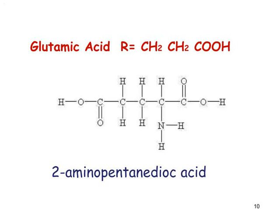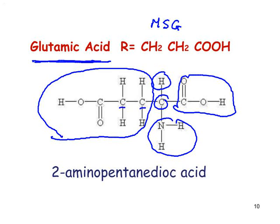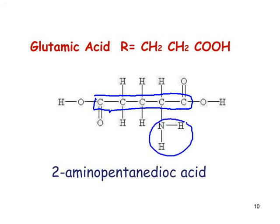Another amino acid worth knowing is glutamic acid, which appears in exam papers occasionally because it is used to make monosodium glutamate, a particularly popular food additive. We will look at the chemistry of how monosodium glutamate is made from glutamic acid. In glutamic acid, the alpha carbon has its hydrogen, carboxyl group, and NH2 group. The R group in this case is CH2–CH2–COOH, making glutamic acid a dicarboxylic acid overall.